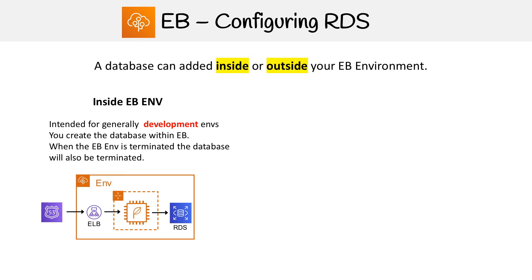Generally, this setup is for development environments — that doesn't mean you can't use it for production. As long as you're using in-place deployment mechanisms, like immutable deployments, that's going to replace the EC2 servers but it's never going to remove the RDS database. But if you for whatever reason delete that entire environment, your database is gone with it.